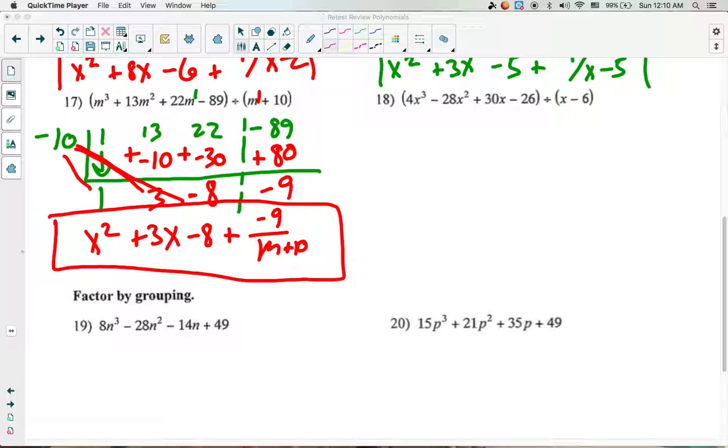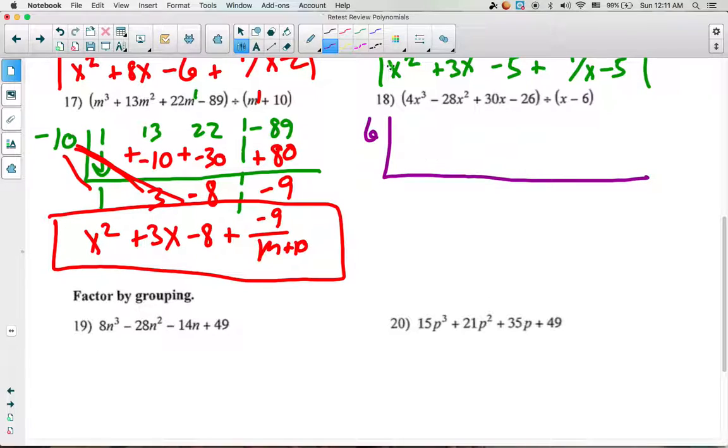Retest Review Polynomials, question number 18. This is, again, a synthetic division. We have an x minus 6. The opposite of minus 6 is a positive 6. So that's what we'll write down first. Make your upside down division bar. We'll take our coefficients and write those down.